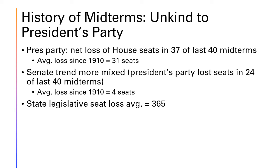The historical trend in the Senate is more mixed, with the president's party losing seats in 24 out of the last 40 midterm elections and an average loss of four seats. The president's party also tends to suffer in state legislatures, with an average loss of 365 state legislative seats. Interestingly, gubernatorial elections are not nearly as prone to these trends, as elections for governor tend to take on a character of their own — we can see this even today with Democrats winning in deep red states like Kentucky, Louisiana, and Kansas, and Republicans winning in deep blue states like Massachusetts, Maryland, and Vermont.